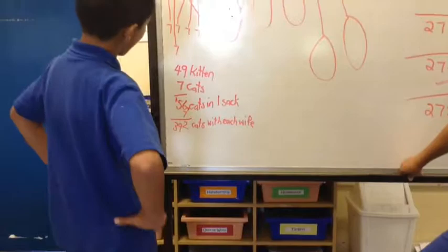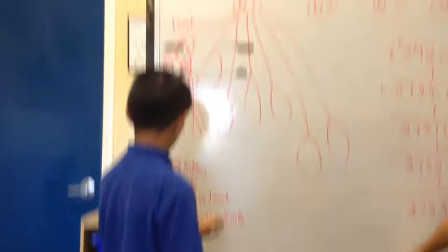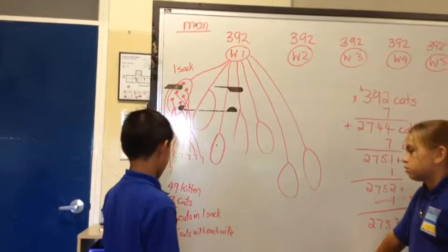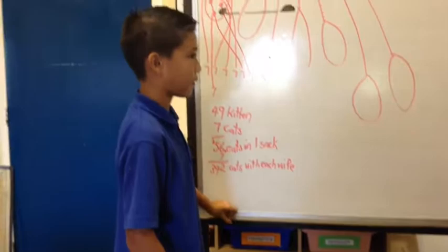So there was a total of 49 kittens in each sack, and seven cats, so that's a total of 56 cats in one sack, times seven is 392 cats with each wife. So we got our answer 392.